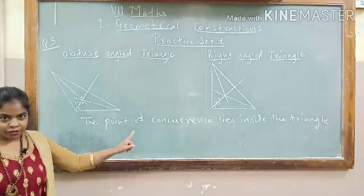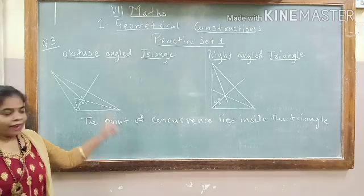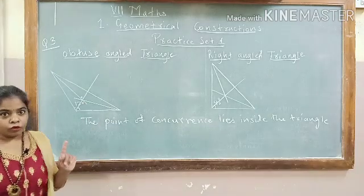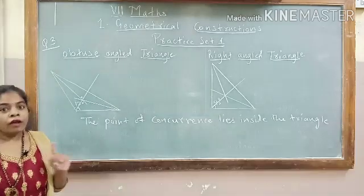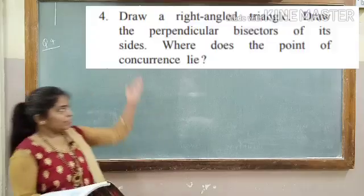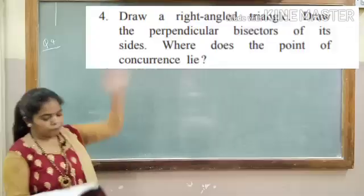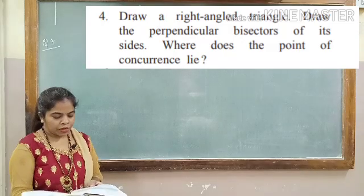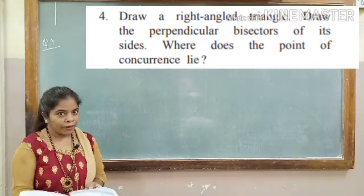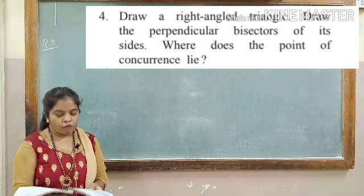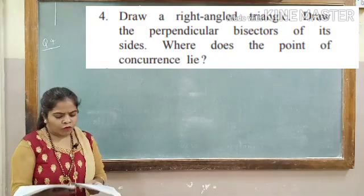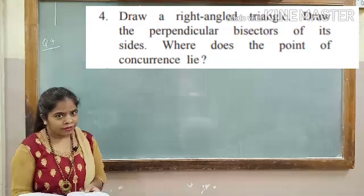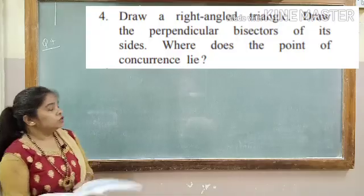Draw these constructions and complete them in your notebook. Let's continue with question number 4. You will see the question flashing up there. Draw a right-angled triangle. Draw the perpendicular bisectors of its sides. Where does the point of concurrence lie? Let's draw it now.